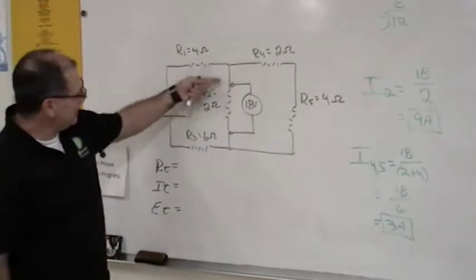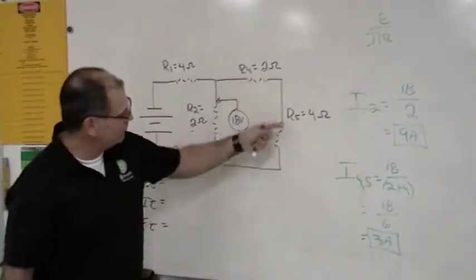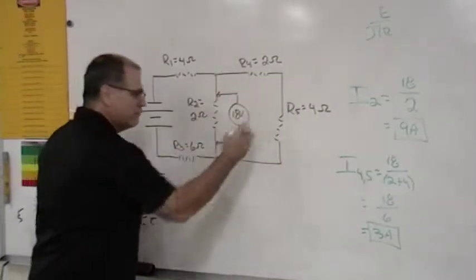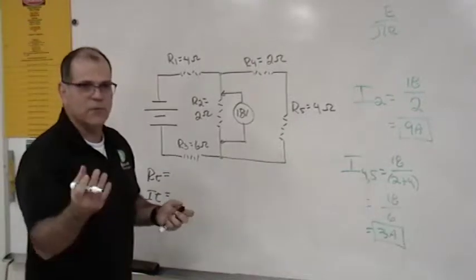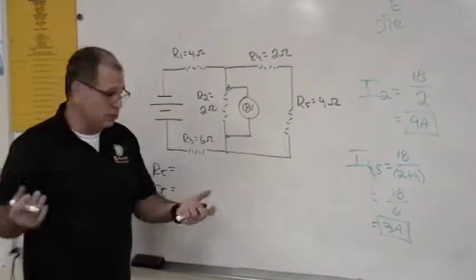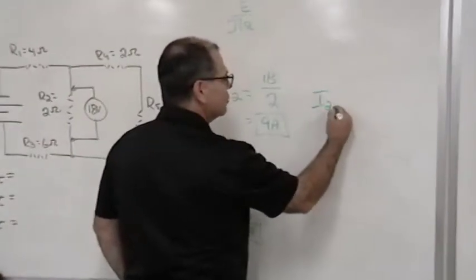Okay, so here's what we got. We got 9 amps flowing through 2. We have 3 amps flowing through 4 and 5. And we know that the relationship between 2, 4, and 5 is parallel. And the rule for parallel current is they just add up, right?